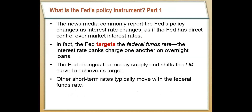We talk a lot about the Fed changing interest rates and the money supply, and it gets difficult to keep straight which one the Fed is really focused on. Places like the Wall Street Journal report Fed policy as changes in the interest rate, as if the Fed just mandates them. But in reality, the Fed targets the Fed funds rate — the overnight interest rate banks charge one another — by increasing and decreasing the total money supply and shifting the LM curve to achieve their desired interest rate.